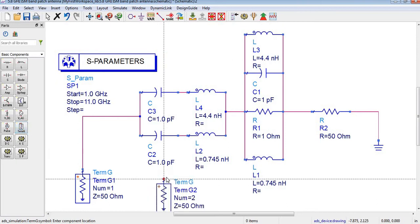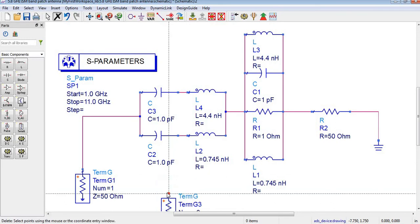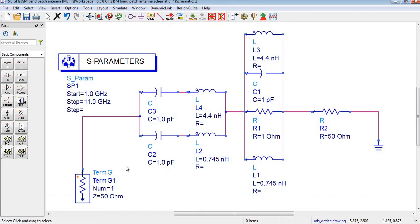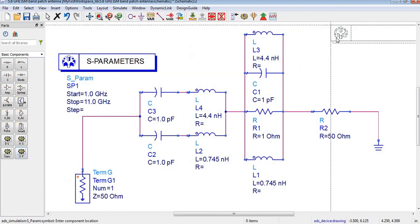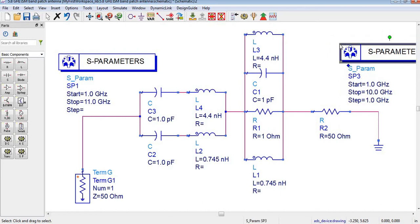This option will give you signal source. Whatever you need you can bring it. S parameter I have selected from this option. You can see in this position I don't need it so I am deleting it.